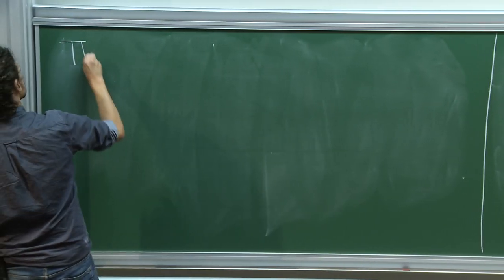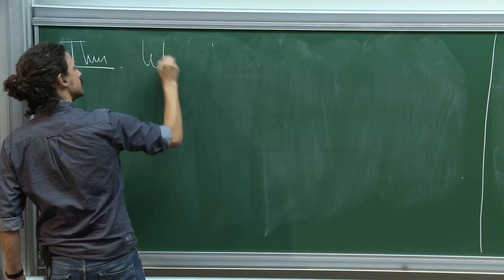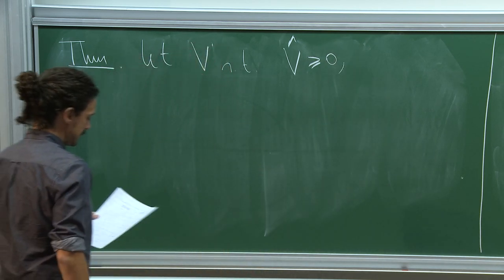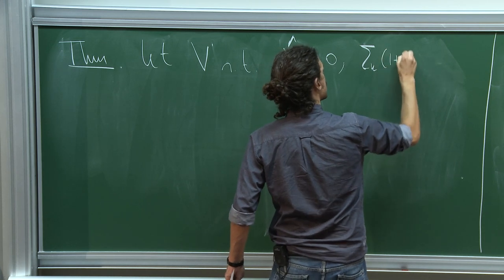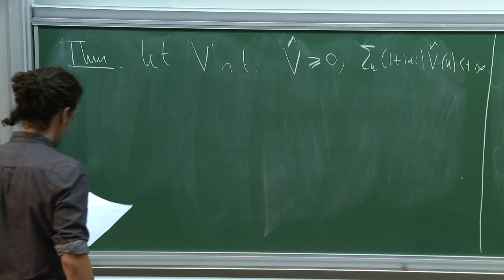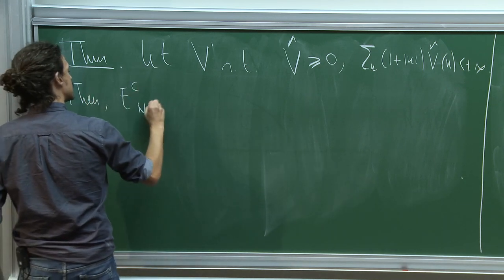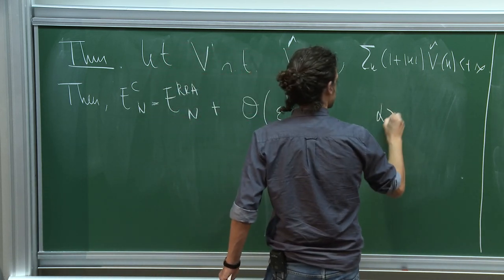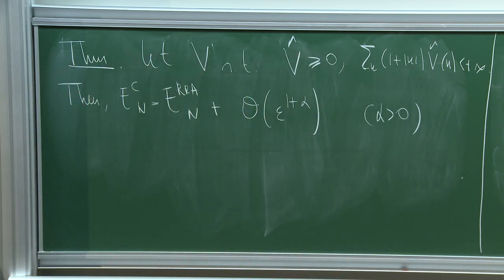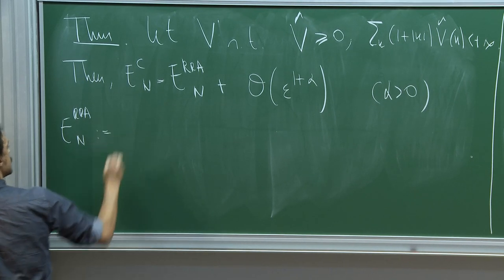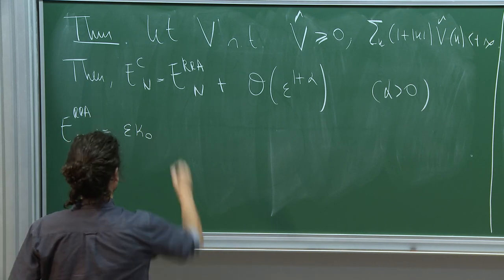The main theorem is about the asymptotics of the correlation energy. Take V such that the Fourier transform of V is non-negative and such that sum over k of (1+|k|)|V̂(k)| is finite — meaning V is bounded with a bounded derivative. Then the correlation energy equals an explicit quantity E_RPA (Random Phase Approximation) up to a subleading term with explicit rate alpha.